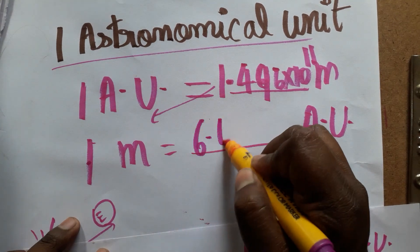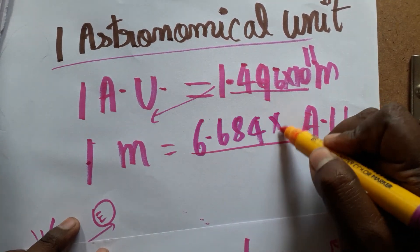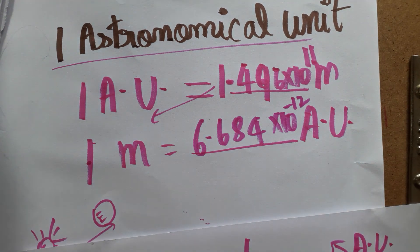1 meter is 6.684 into 10 power minus 12 astronomical unit. Thank you for watching my video. If you like my channel please subscribe.